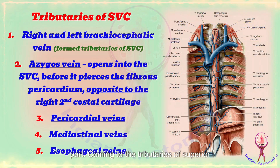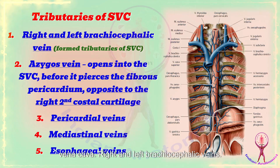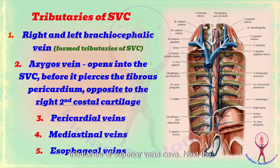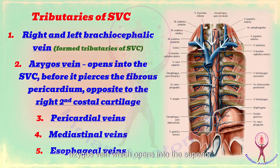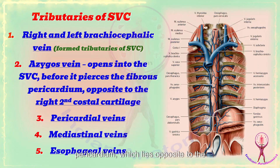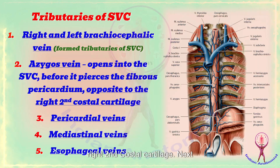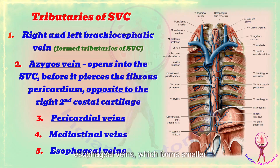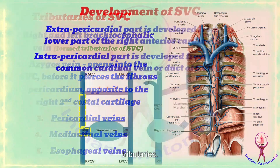The tributaries of the superior vena cava include the right and left brachiocephalic veins, which are the main formed tributaries. Next, the azygos vein opens into the superior vena cava before the superior vena cava pierces the fibrous part of the pericardium, which lies opposite to the right second costal cartilage. Additionally, pericardial veins, mediastinal veins, and esophageal veins form smaller tributaries.